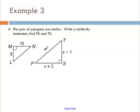This pair of polygons are similar. Write a similarity statement and find two of the sides. As I look at this, right now I don't have enough information except that I know 8 is smaller than 10 and X minus 1 is smaller than X plus 2. Because when you add 2 to any number, it's bigger than subtracting one. So I know 8 and X minus 1, they're not congruent, but they follow the same scale factor. And then 10 and X plus 2 are associated in that scale factor as well.